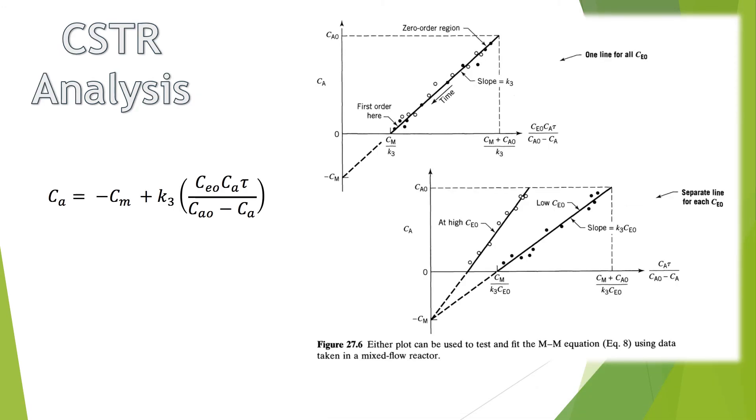Next is the CSTR analysis. The equations shown are different from that of the batch reactor, but are similar in that the design equation has been reorganized to enable a linear graph of the data. This one is a little simpler, though. The Y value is CA, the B value is negative CM, the X value is the fraction on the right, and the rate constant is the M.